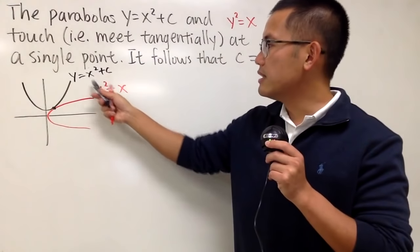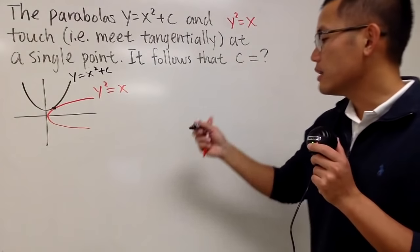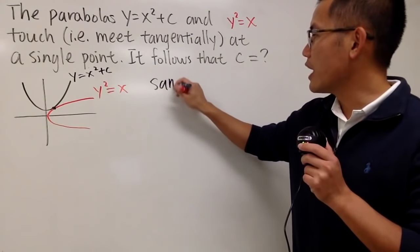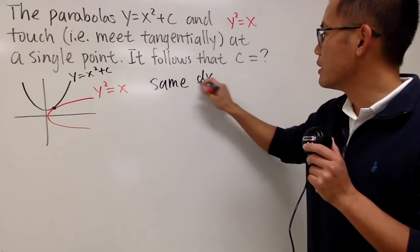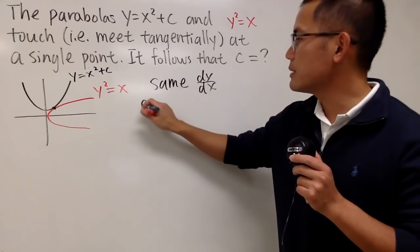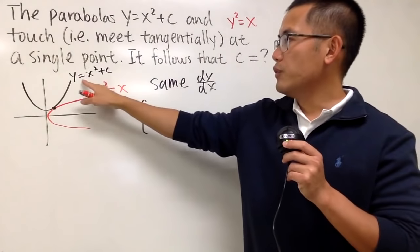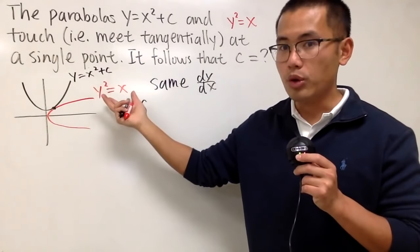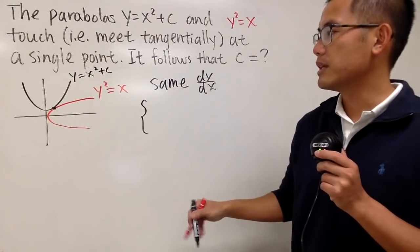Of course, we can set this and that equal to each other for the same point. But let's begin with the same derivative. And the reason is because if you set this equal to each other, we still have the c to worry about. Let's do the derivative first.